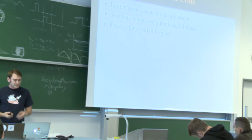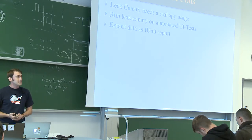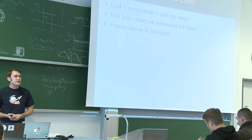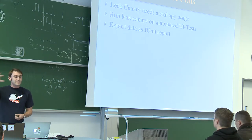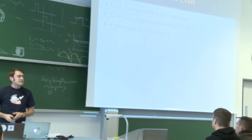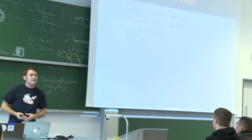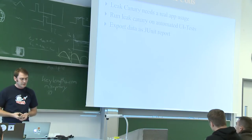The memory leaks get exported as a JUnit report, and then Jenkins just gives you a small graph saying, 'okay, there are six memory leaks that we found while your automated UI tests ran.'